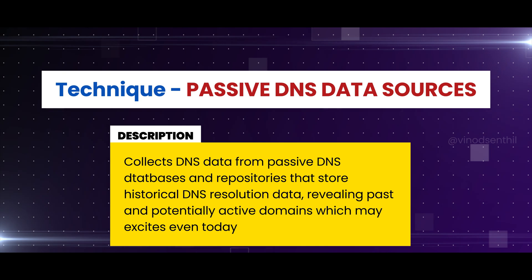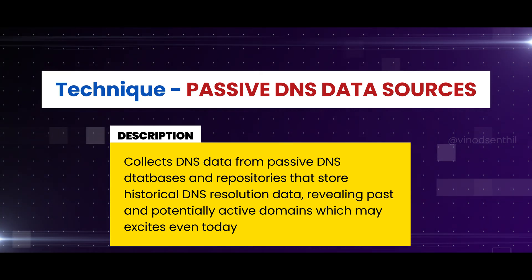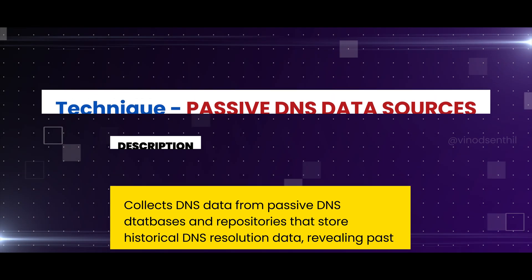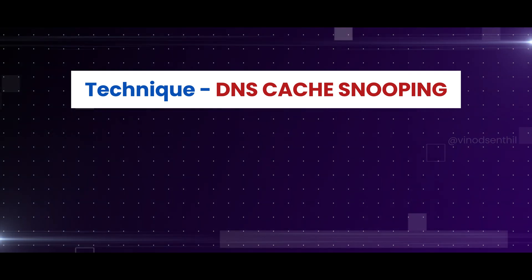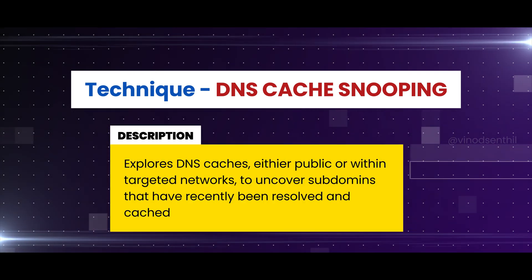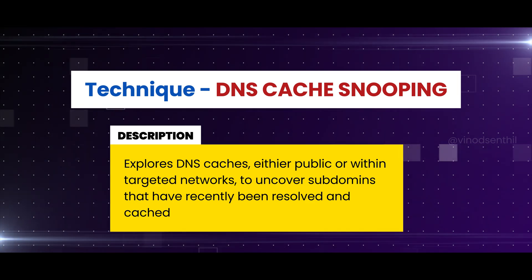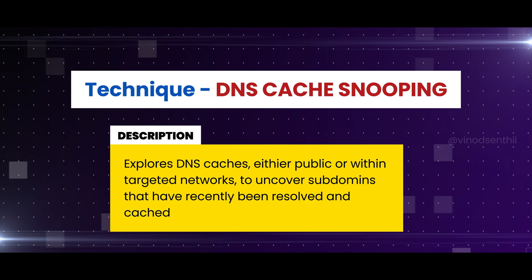Passive DNS data sources: collects DNS data from passive DNS databases and repositories that store historical DNS resolution data, revealing past and potentially active subdomains. Last but not least, DNS cache snooping — explores DNS cache, either public or within the targeted network, to uncover subdomains that have recently been resolved or cached.